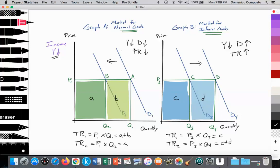So to summarize, we can see that as incomes fall, demand falls for normal goods leading to a fall in total revenue for those firms. And as income falls, demand for inferior goods rises leading to an increase in total revenue. If you have any questions, feel free to comment and don't forget to subscribe and to like. Thank you so much.